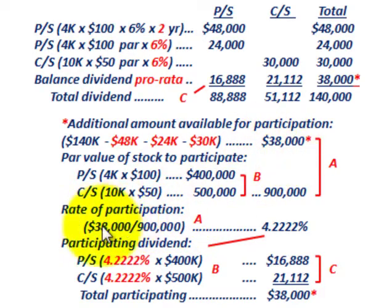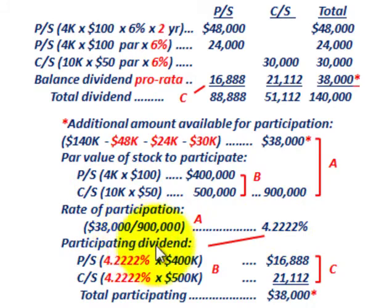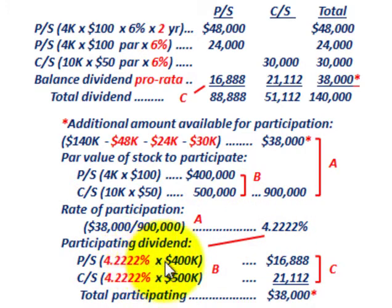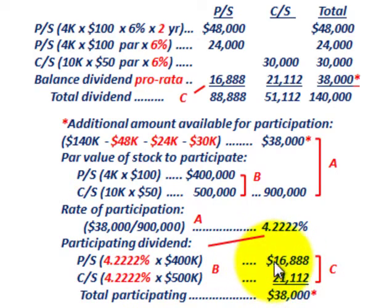We take the $38,000 — the total amount remaining to be allocated — divided by the $900,000 total par amount for common and preferred stock, and we get the rate of participation as a percentage: 4.222%. Now calculating the participating dividend, for preferred stock we take the rate of participation, 4.222%, times the total par value of $400,000, giving an allocation to preferred stock of $16,888, as shown above.